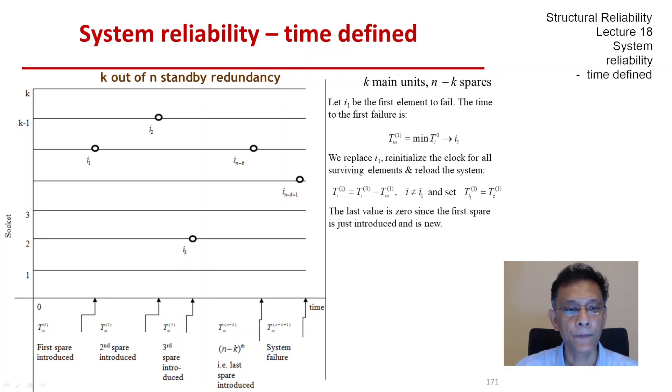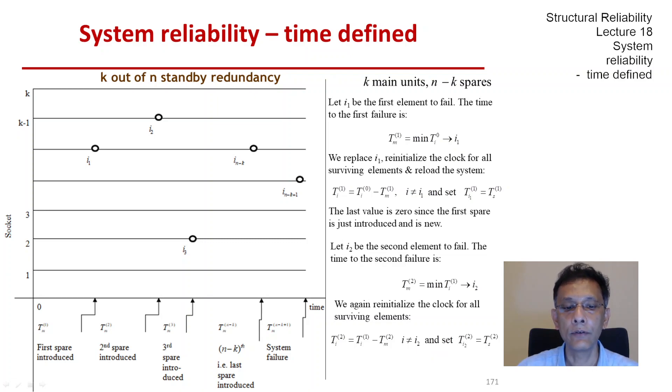This continues. Let i_2 be the second element to fail. The time to the second failure is t_m superscript 2, and that's how we identify i_2. Then we replace that with a spare with life t_s^2, reset, and put the system back online. That gives me t_i^2 for all of them except i_2, which is now the life of the second spare.